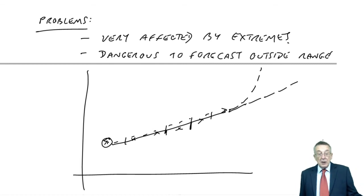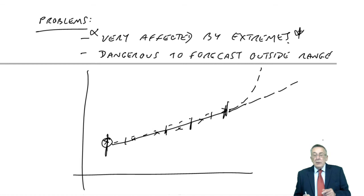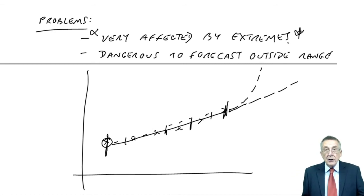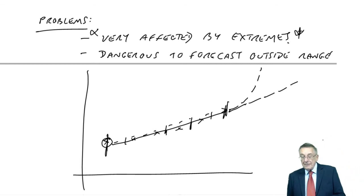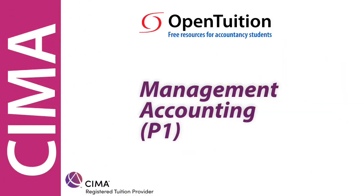Anyway, that's the high-low approach. As I've said, on the one hand it is very easy, it's very quick, but this problem of being affected by extremes, the highest or the lowest being unusually high or low, which is why a better approach is the one I'll do in the next lecture, which is called regression analysis. But anyway, that's high-low, we'll leave that bit there. Thank you.